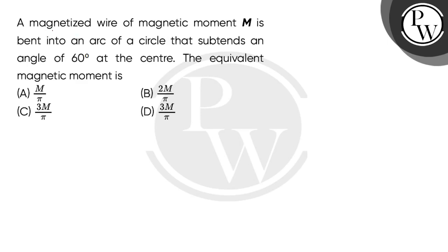Hello children, let's read the question. A magnetized wire of magnetic moment M is bent into an arc of a circle that subtends an angle of 60 degrees at the center. The equivalent magnetic moment is.